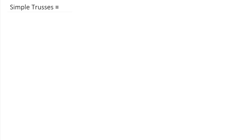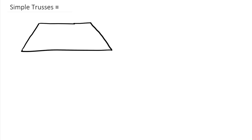Trusses — you likely have seen trusses if you've ever been up in the attic of your house, or in buildings with more open architecture. A truss is essentially a series of slender members. Here would be an example of a truss — we put dots where all these members come together and call these joints.